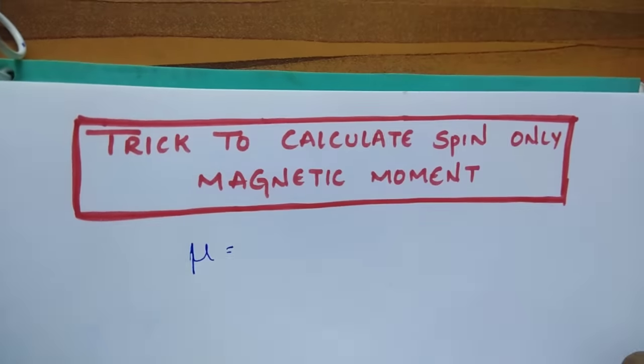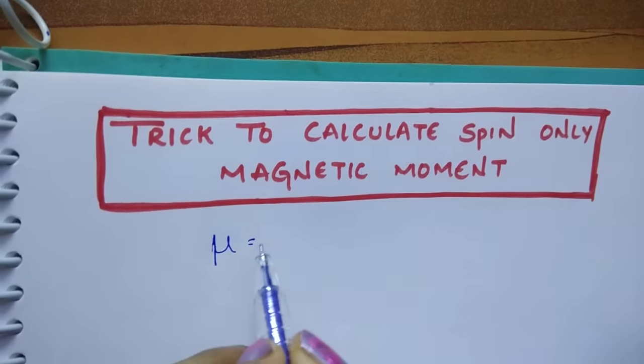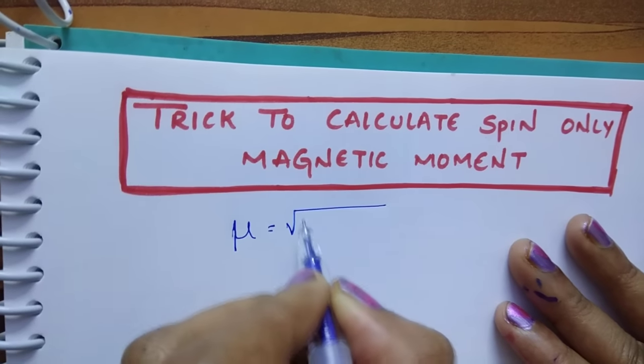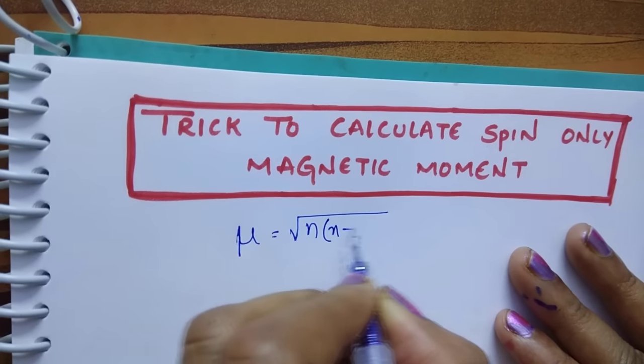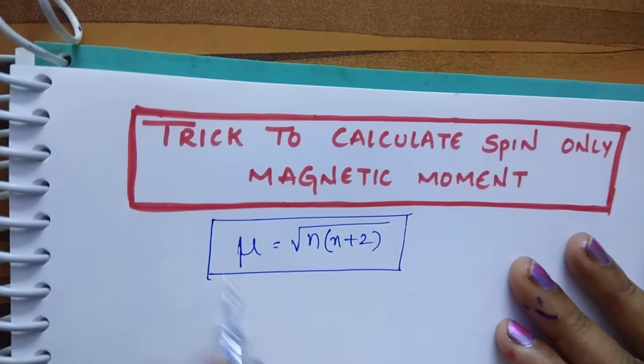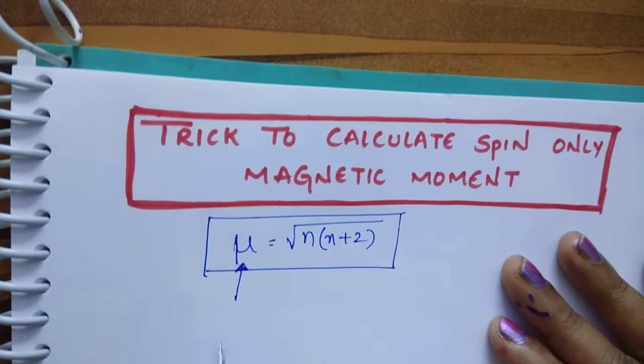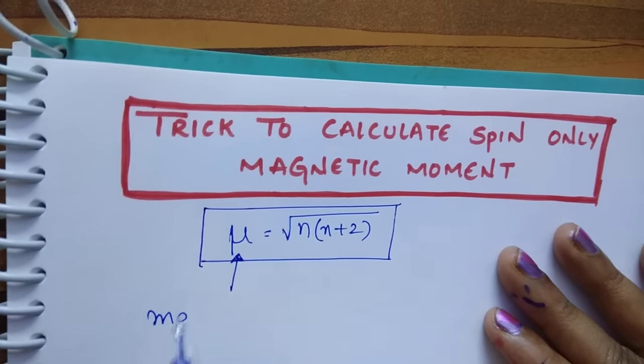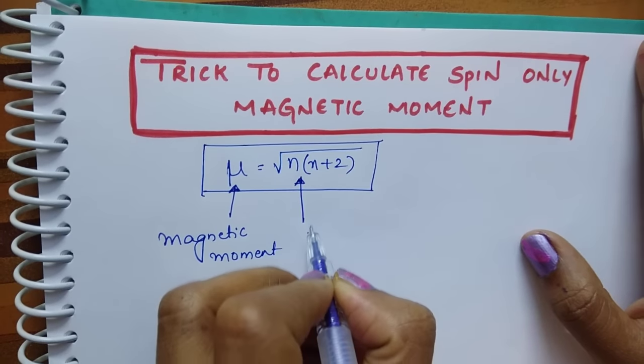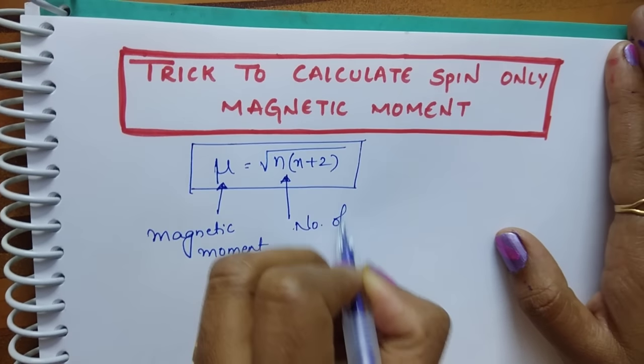We all know the formula to calculate magnetic moment: μ equals square root of n into n plus 2 Bohr magnetons. This is the formula. Here μ is magnetic moment and n is the number of unpaired electrons.